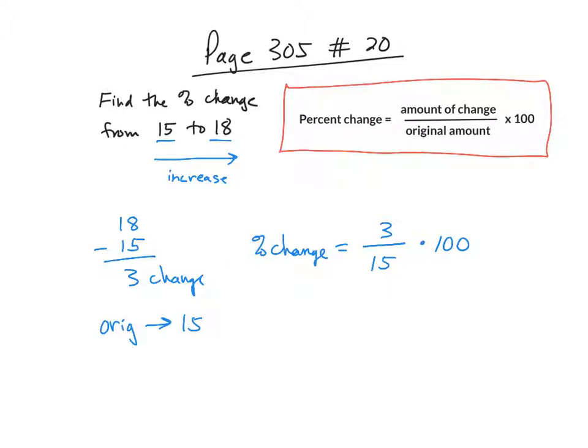If I just look at this part, 3 divided by 15 is 0.20, and I'm looking for a percent change, so we do need to change that to a percent, and the way that we do that is we multiply by 100. So 0.20 times 100, that turns out to be a 20% change, and because I went from 15 to 18, that's an increase.